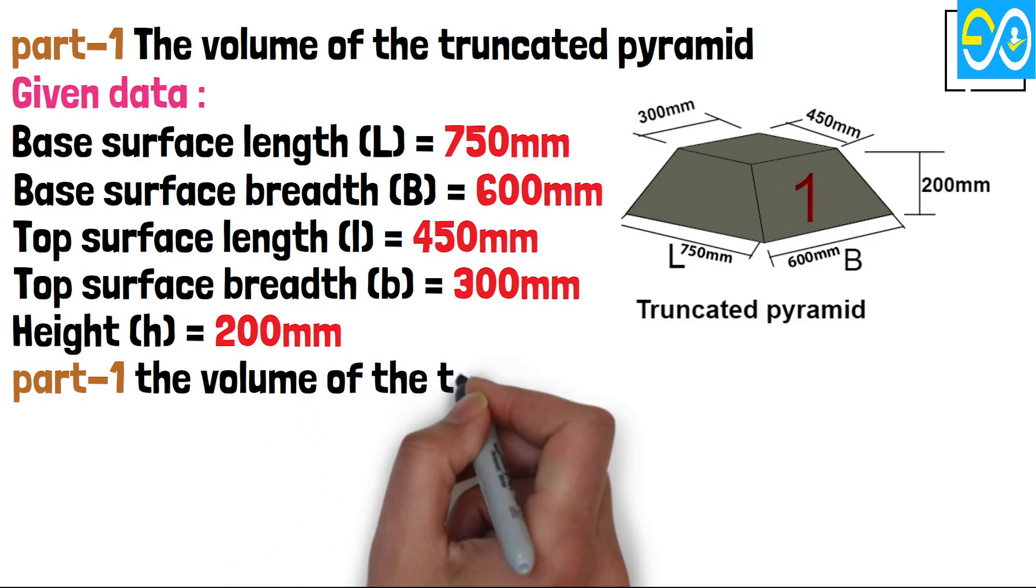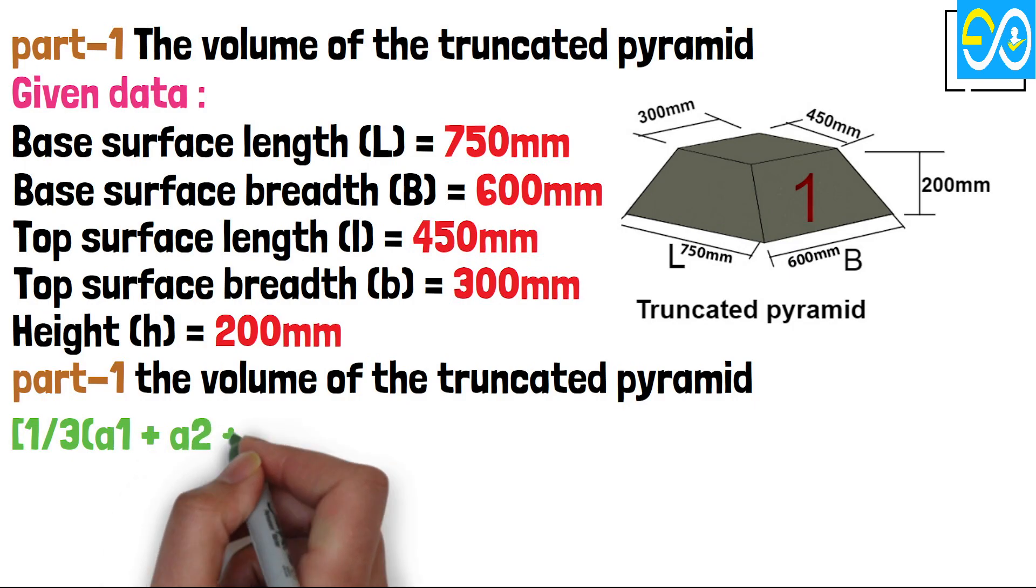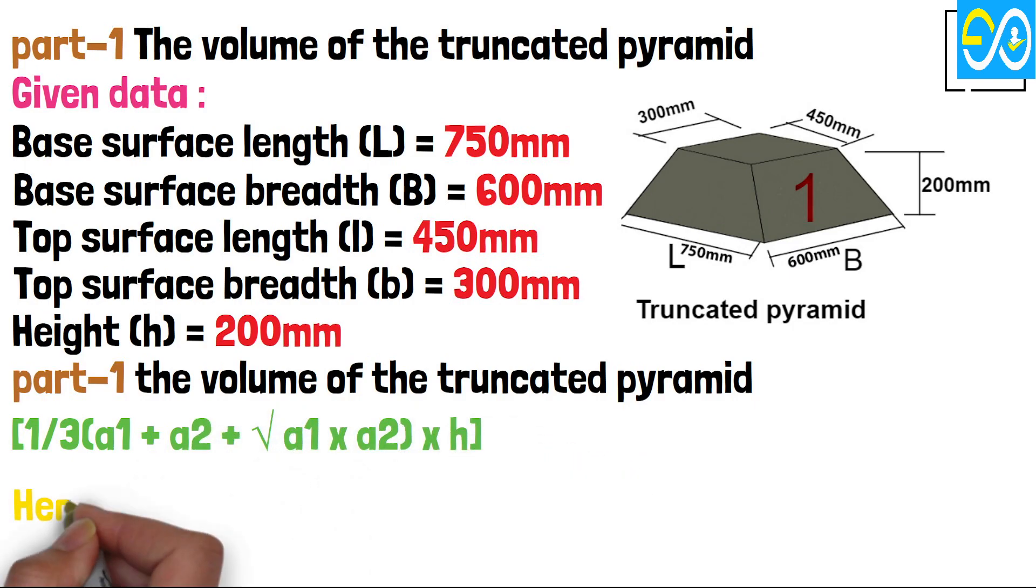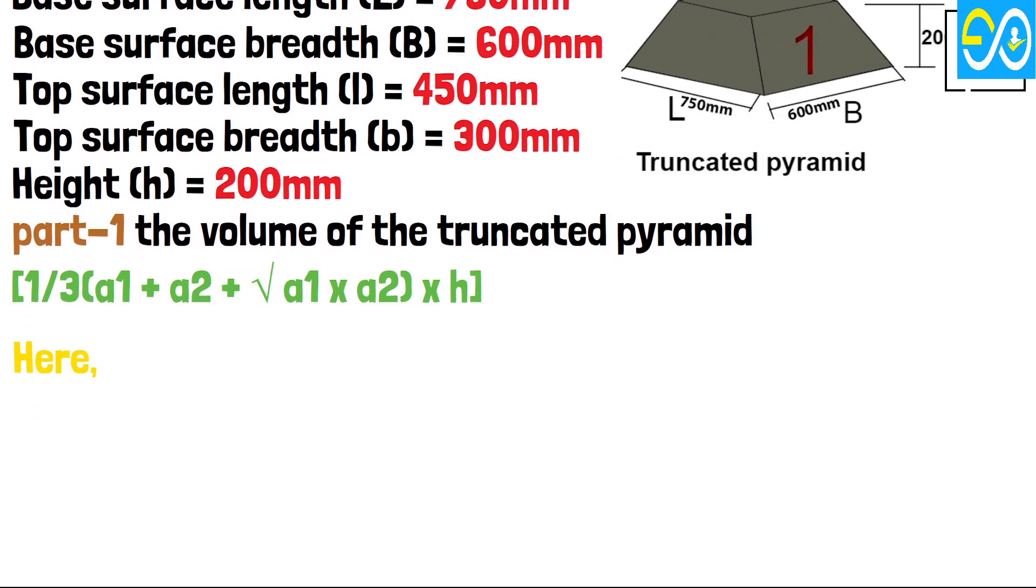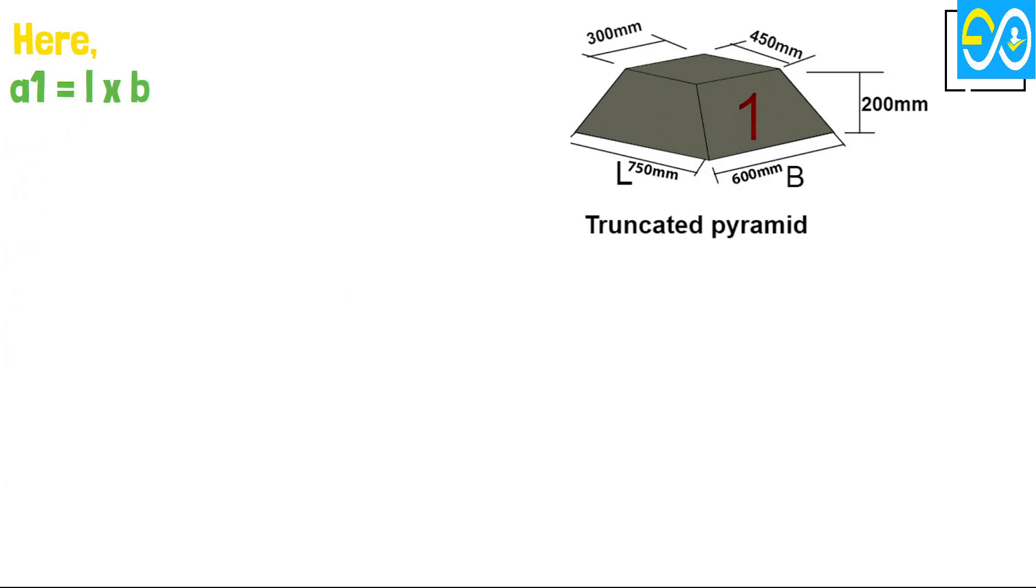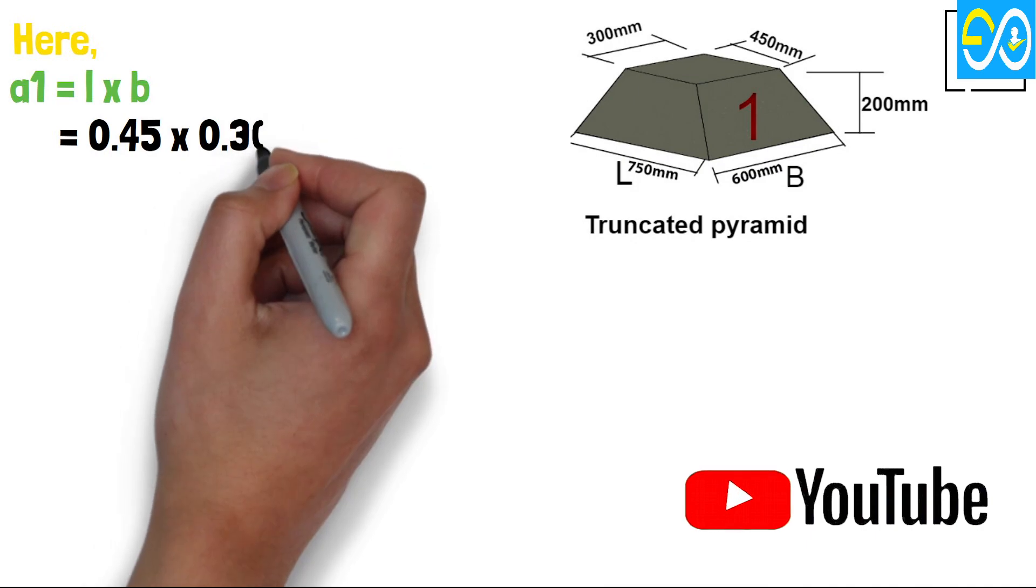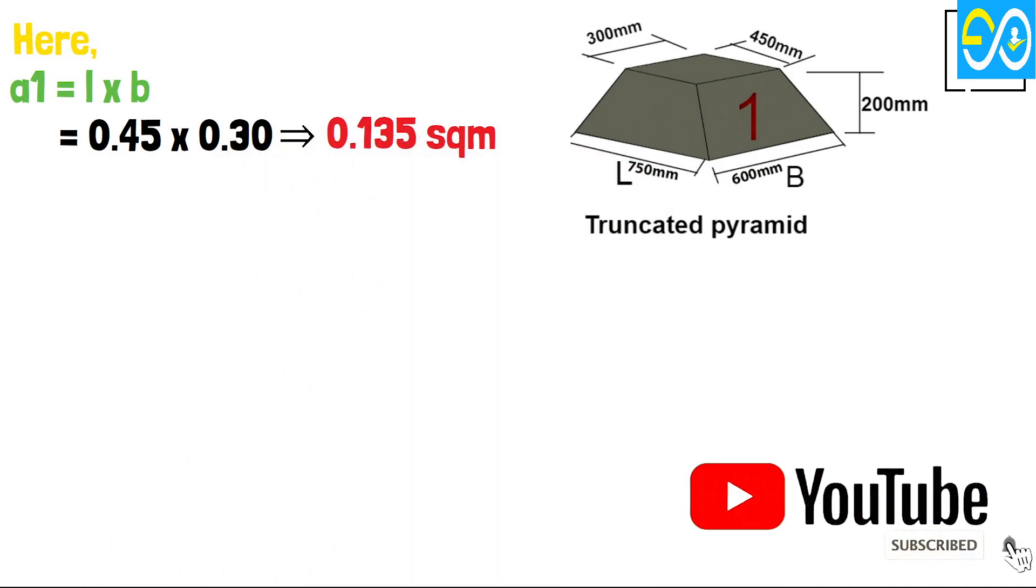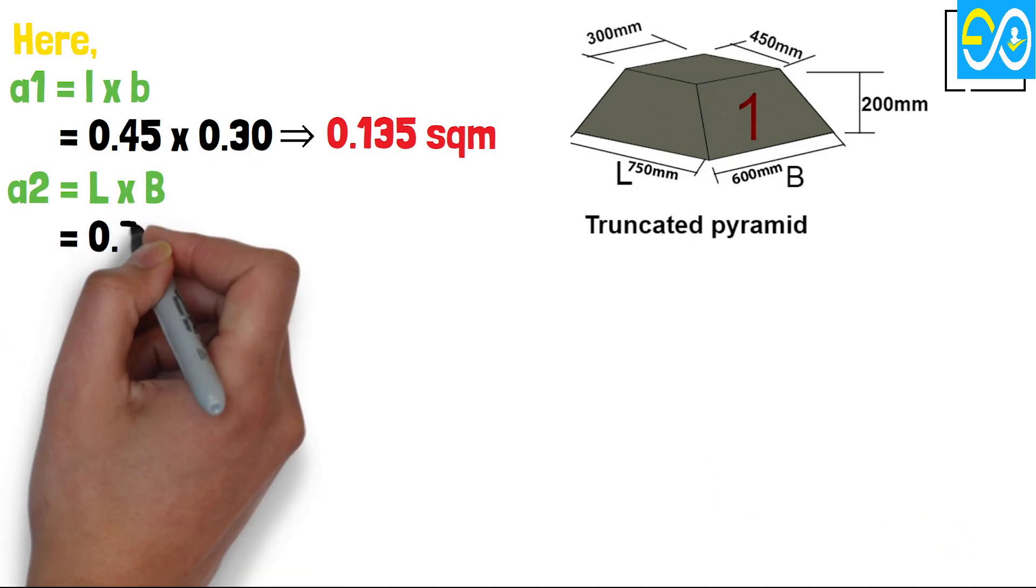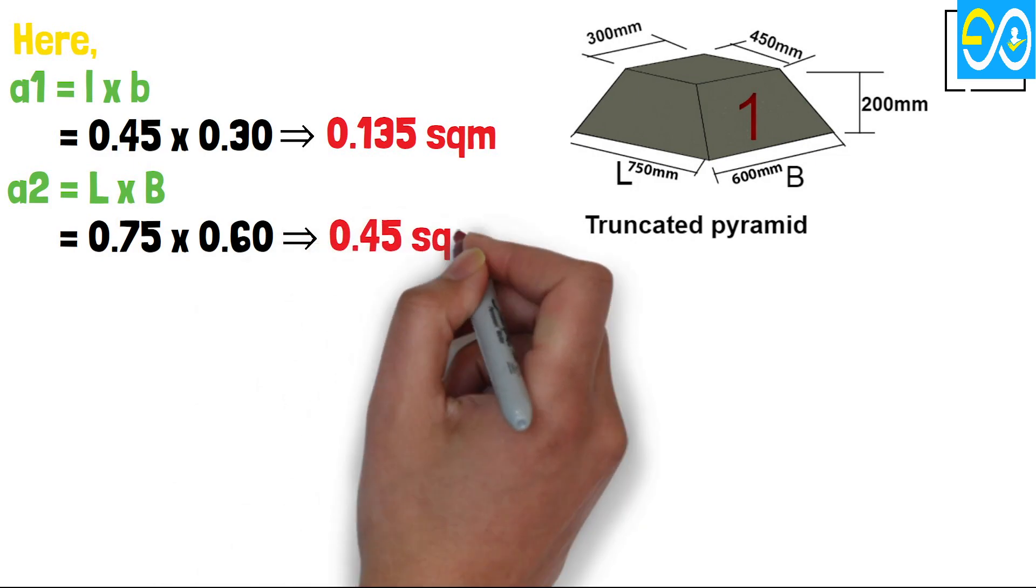Part 1: The Volume of the Truncated Pyramid equals 1/3 (A1 plus A2 plus square root of A1 times A2) times H. Here A1 equals l times b equals 0.45 times 0.30 equals 0.135 square meters. A2 equals L times B equals 0.75 times 0.60 equals 0.45 square meters.